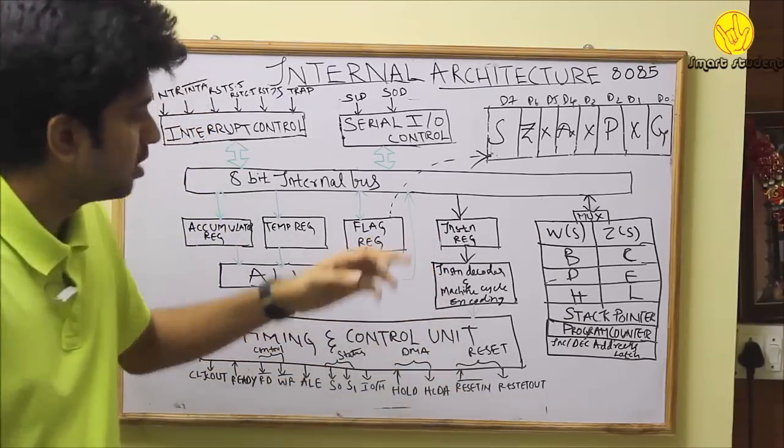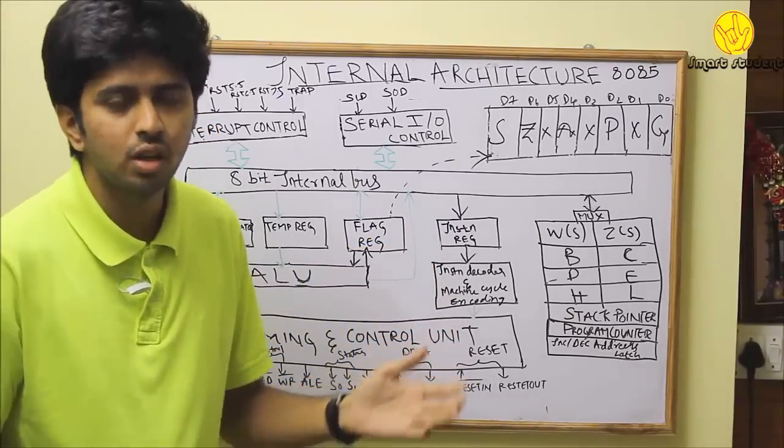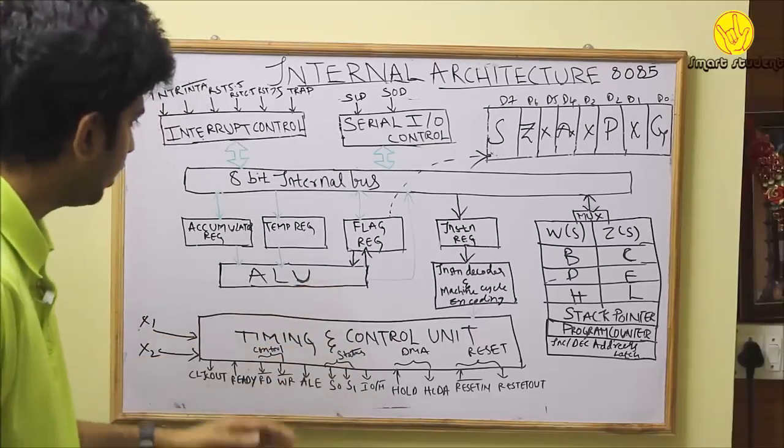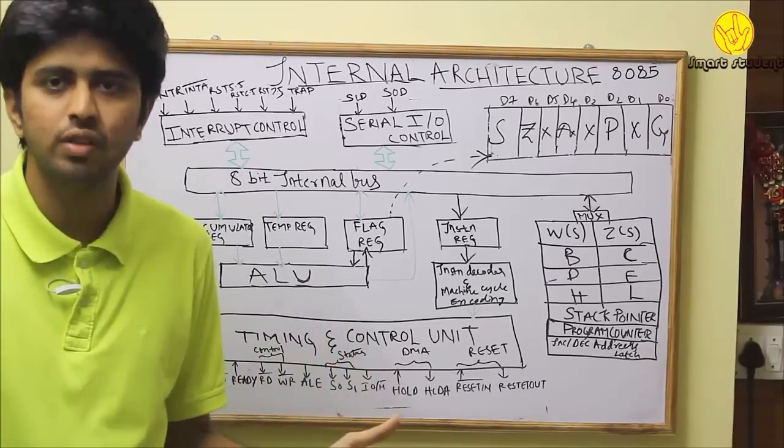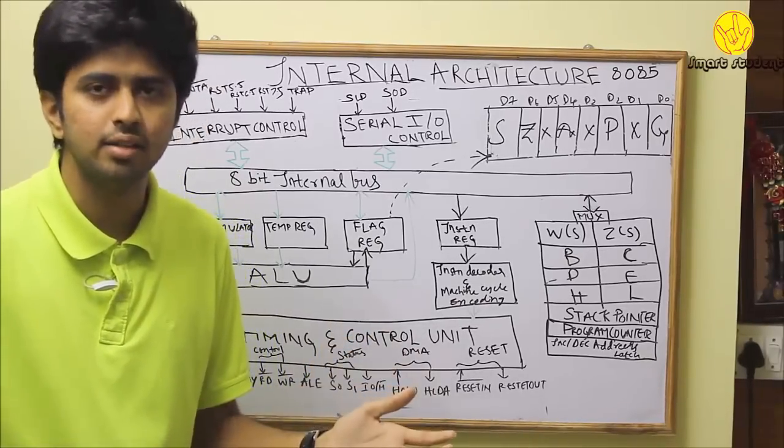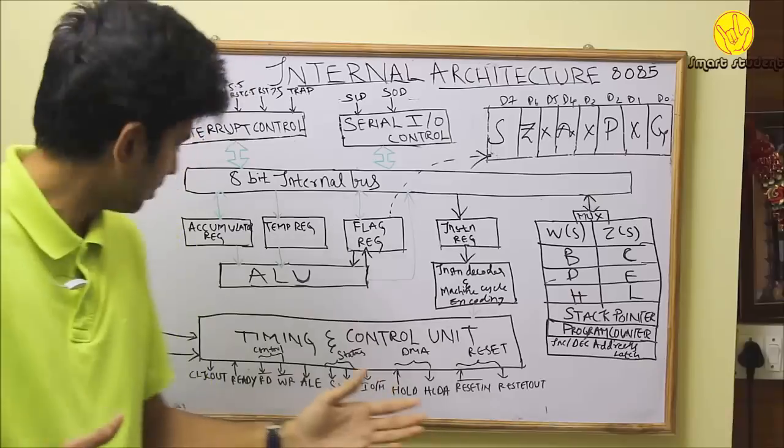Coming to the instruction register: instruction register consists of the op-codes which are understood by the machine. Coming to the timing and control unit, it consists of X1 and X2. X1 and X2 are the clock frequencies which are set to 3 MHz by using a crystal oscillator of frequency 6 MHz.